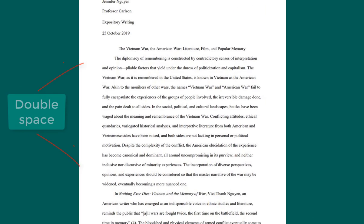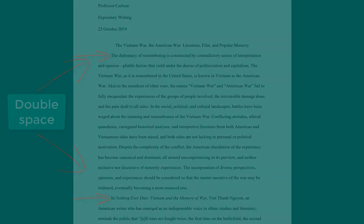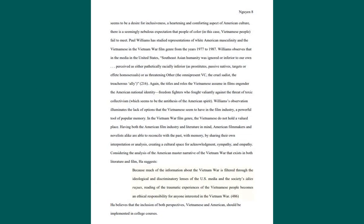Double-space the entire research paper, including quotations and the list of works cited. Indent the first line of a paragraph half an inch from the left margin. Also indent block quotations a half an inch. Leave one space after a period or other concluding punctuation mark.